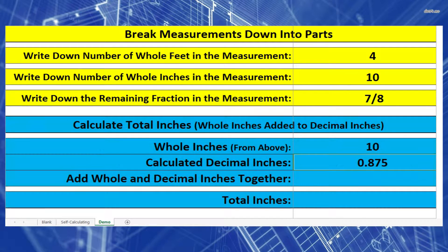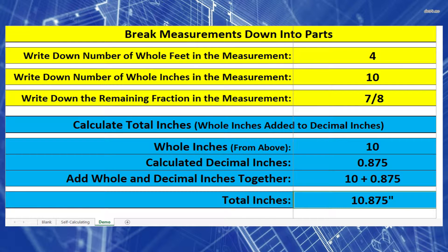Now we need to take our whole inches and add it to our decimal inches. So 10 plus 0.875 inches equals 10.875 inches.